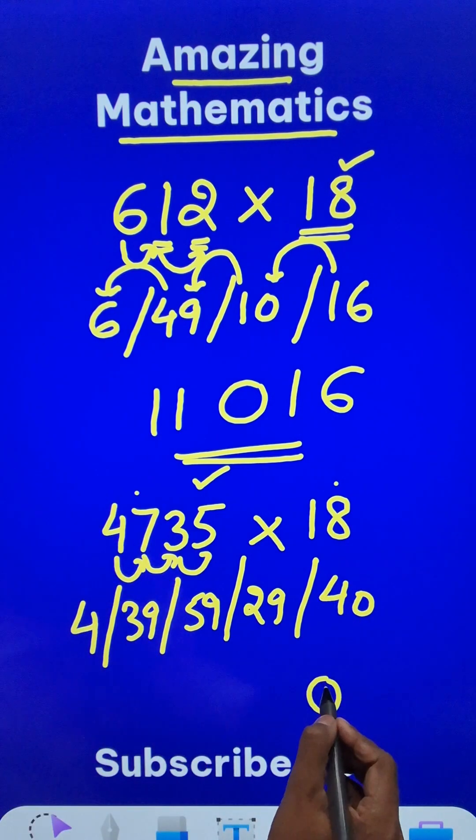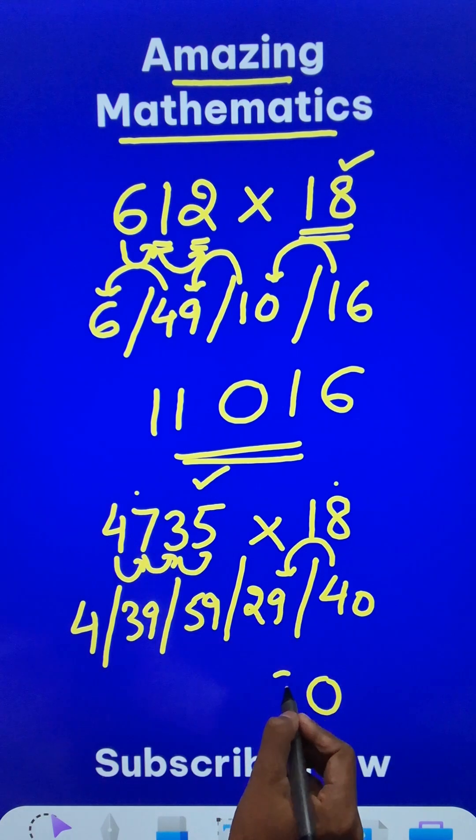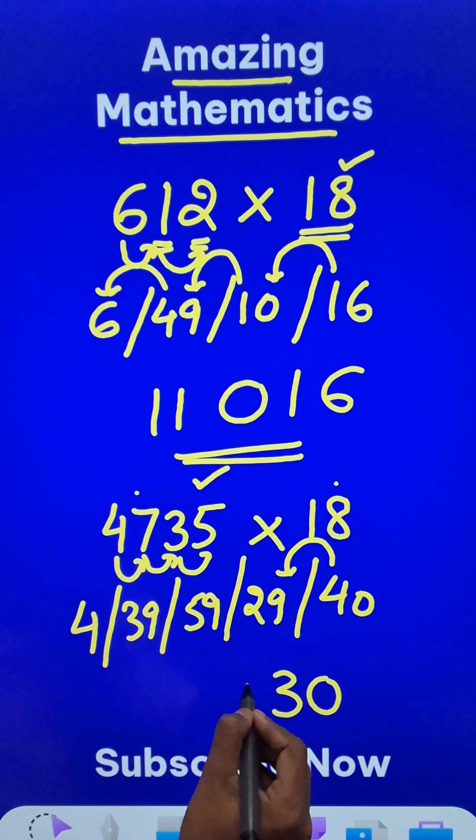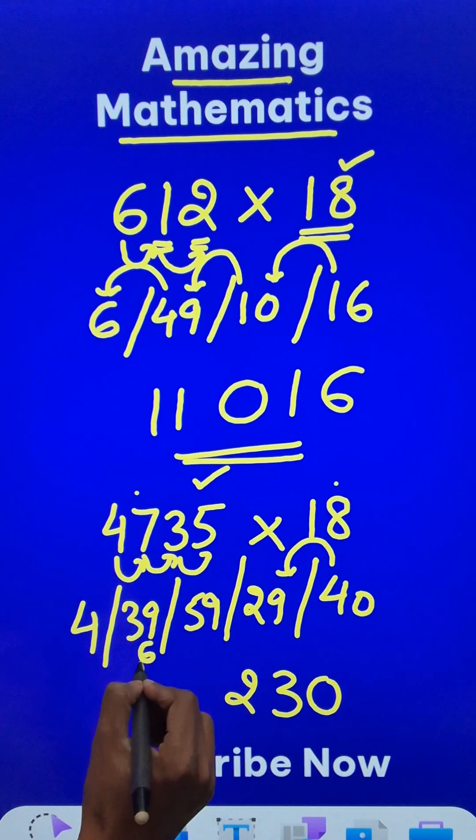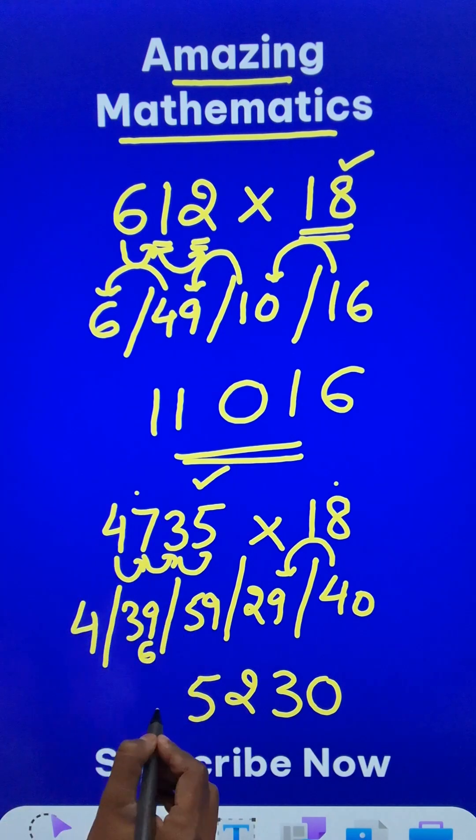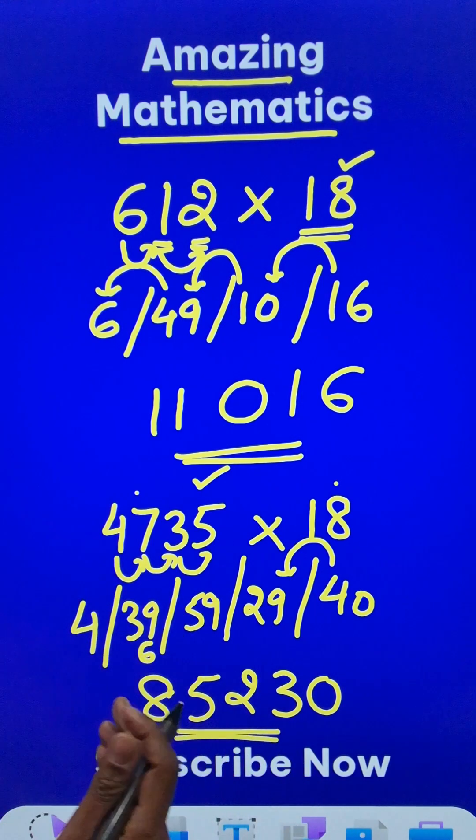Now start writing from the unit digit, 0. 4 carry means 33, 3. 3 carry means 62, 2. 6 carry means 45, 5. 4 carry means 8, and here you have the answer 85, 2, 3, 0. Isn't that amazing?